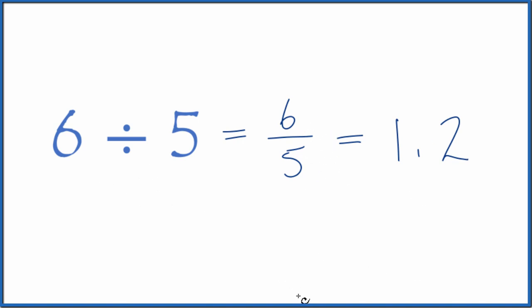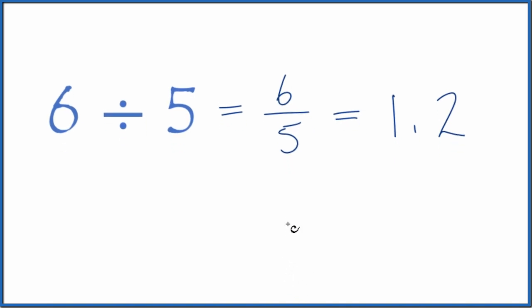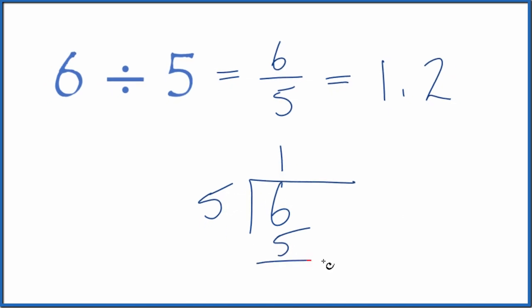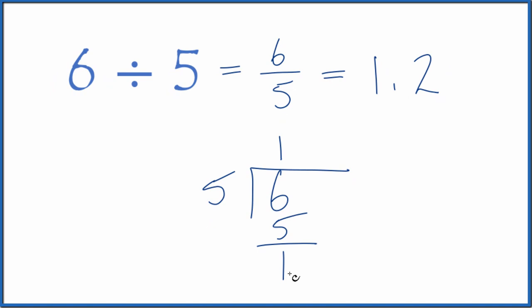We could also divide 6 by 5 longhand. So we could say 6, and we want to know how many times 5 goes into 6. It goes in there once. 1 times 5, that gives us 5, and we have 1 left over as our remainder.